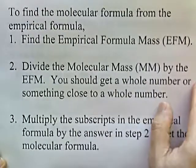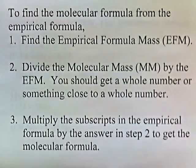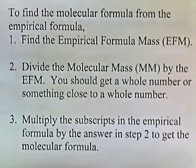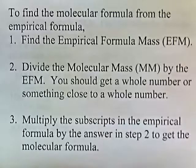To find the molecular formula from the empirical formula, first you need to find the empirical formula mass — that's the mass based on the empirical formula. Second, divide the molecular mass (MM) by the empirical formula mass; you should get a whole number or something close to a whole number. Third, multiply the subscripts in the empirical formula by that answer to get the molecular formula.